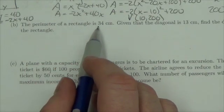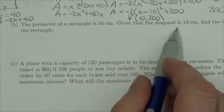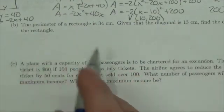The perimeter of a rectangle is 34 centimeters. Given that the diagonal is 13 centimeters, find the dimensions of the rectangle.